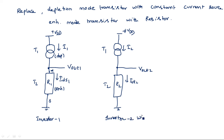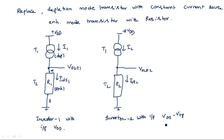So VGS for inverter 1 equals VDD, and VGS for inverter 2 equals VDD minus VTP. We will calculate Vout1 and Vout2 individually, then equate them to get ZPU/ZPD for this network. Vout1 is the voltage from the output node to ground, equal to I1 times R1; similarly Vout2 equals I2 times R2.